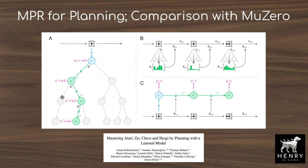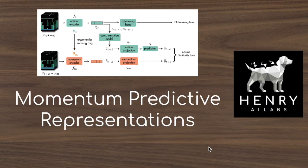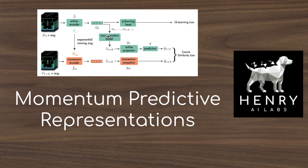Thanks for watching this overview of momentum predictive representations. Hopefully you now understand how this algorithm uses an auxiliary self-supervised learning algorithm with a temporally consistent contrastive learning loss and a moving average target of the same encoder network to learn representations that facilitate reinforcement learning, as well as the motivations behind data-efficient RL, dominant paradigms like auxiliary self-supervised learning, model-based or offline RL, and connections to research like BYOL and MoCo. Please subscribe to Henry AI Labs for more deep learning and AI videos.